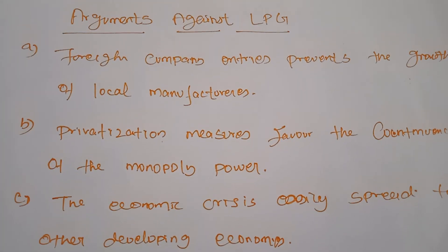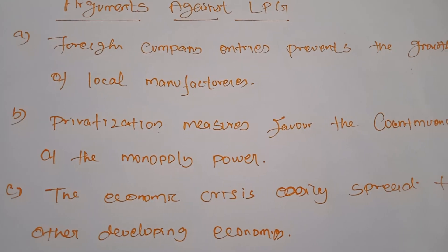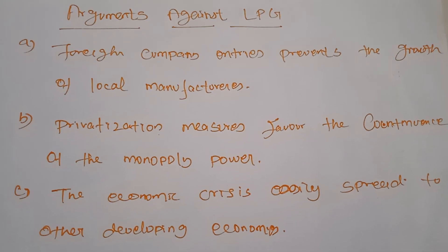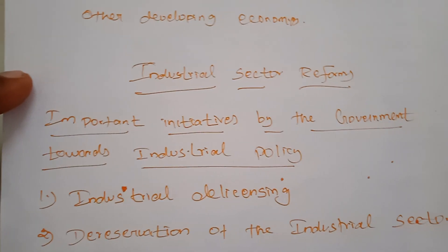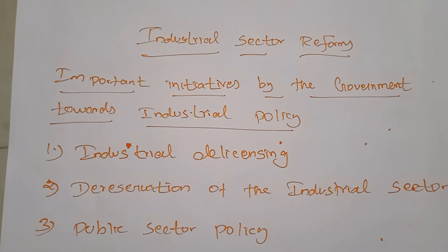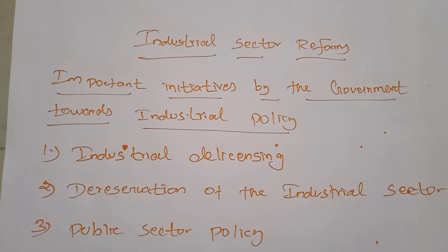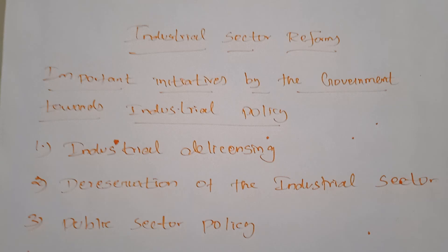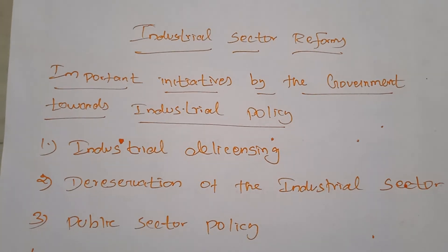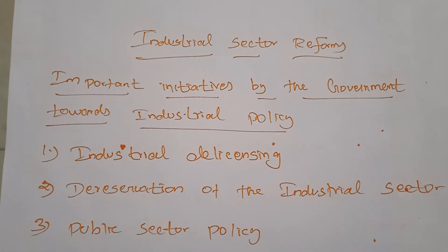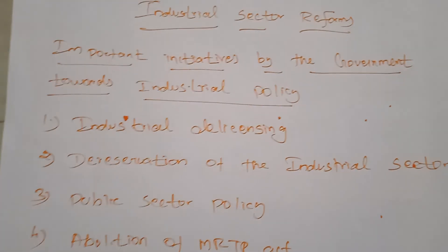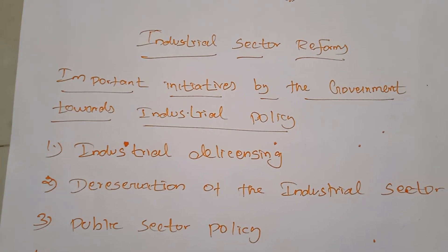Raw materials for industrial sectors come largely from agricultural sectors. The natural and human resources of developing countries are exploited by developed countries, and developing economies are used as markets for the finished goods of developed nations. After privatization and globalization, foreign direct investment brought foreign players into host countries, and human and natural resources began to be used for increasing GDP.